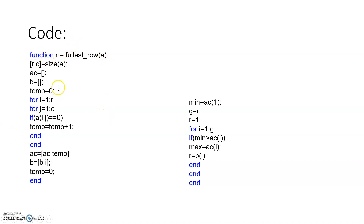The function is written as: function R = fullest_row(A), where A is our input matrix. Then rc = size(A), since the user provides the input and we need to calculate the dimensions using the built-in size command. We define ac as an empty array to store the number of zeros in each row, and b as another empty array for mapping — b will store the row number and ac will store the corresponding total number of zeros for that row. temp = 0 is defined to count zeros in each row.